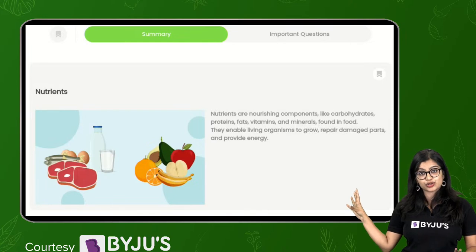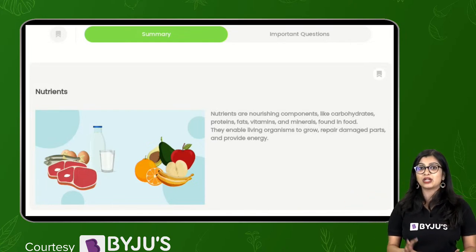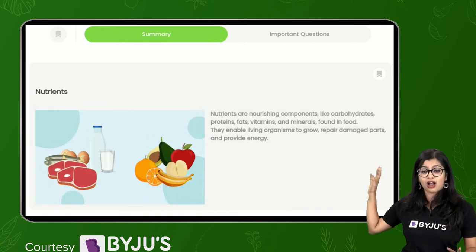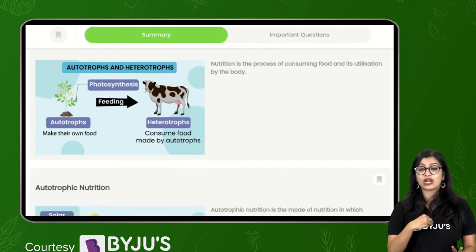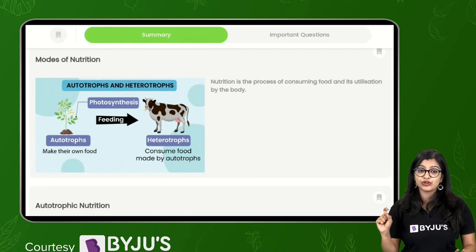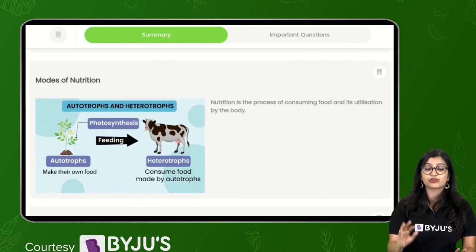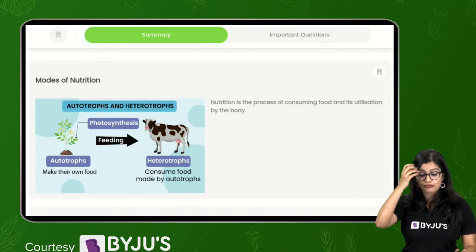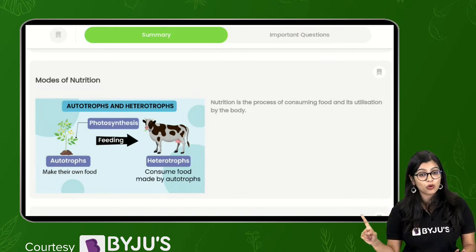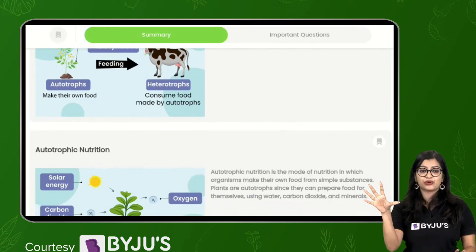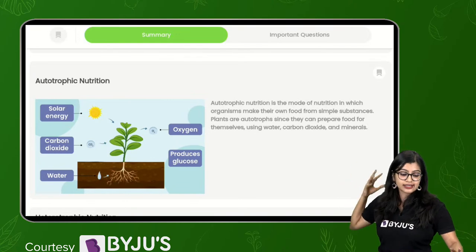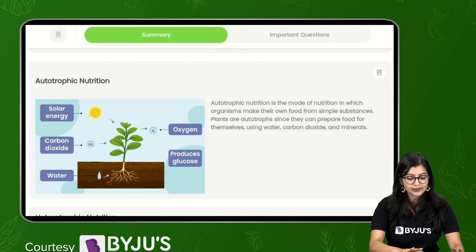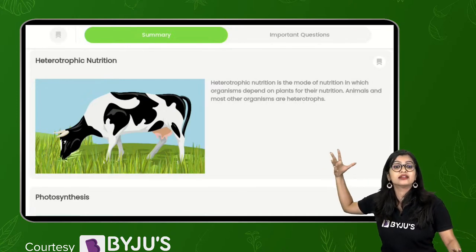We started learning about nutrition in plants by first understanding what are nutrients. We know that there are important components in our food which at the end of the day are necessary for growth, repair and so on. We have various kinds of nutrients like carbohydrates, proteins and fats, vitamins and minerals. The way in which we take in food and we utilize it is what we call as nutrition. How many modes of nutrition do we have? We have two broad modes - autotrophic mode of nutrition and heterotrophic mode of nutrition.